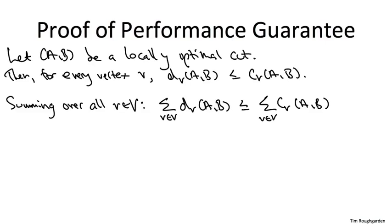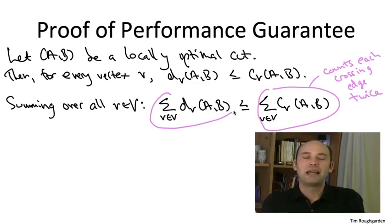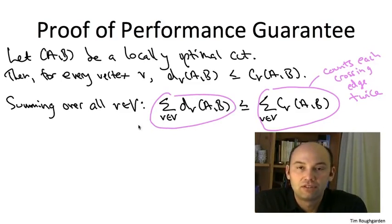Now let's focus first on the right-hand side of this summed up inequality. So the sum over all of the vertices in the graph of the number of edges incident to that vertex that are crossing the cut. Now here's the main point. What is this sum on the right-hand side counting? It's counting each edge that crosses the cut AB exactly twice. Consider an edge, say U, W, which is crossing the cut AB. It gets counted twice in the right-hand side, once when V equals U, and once when V equals W.